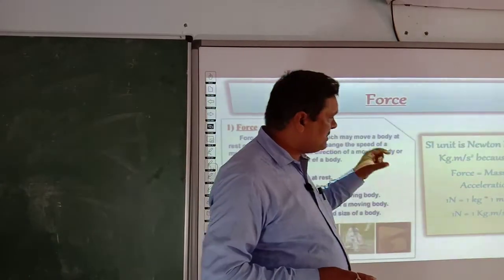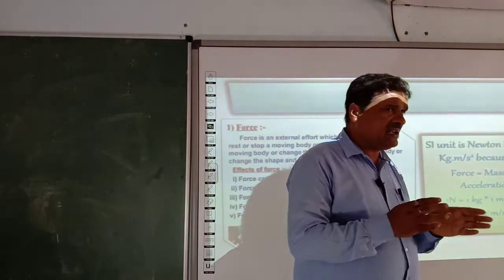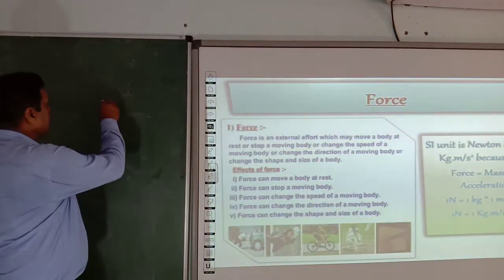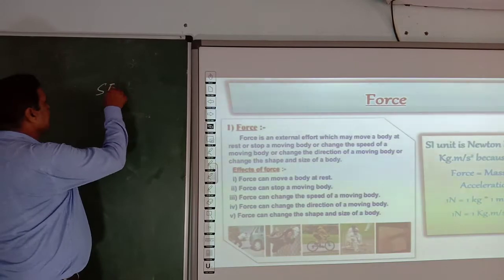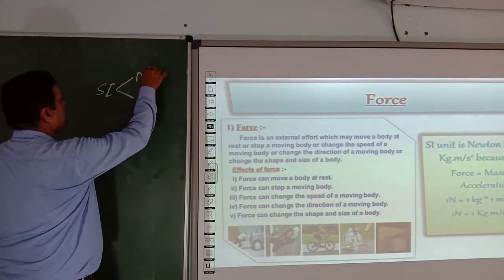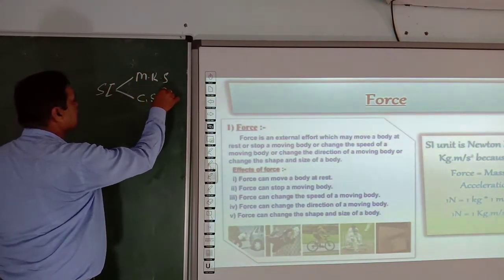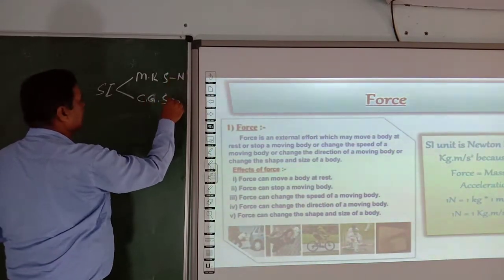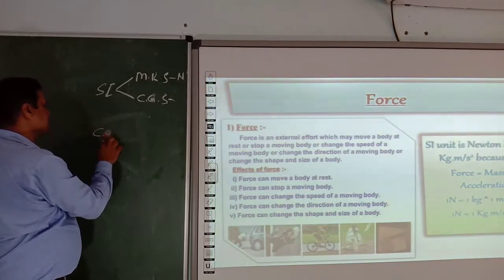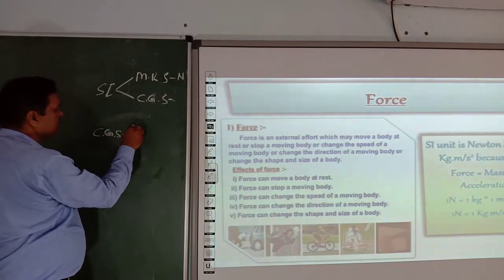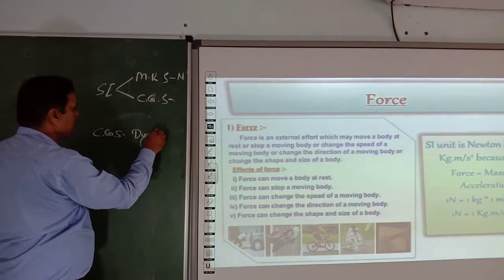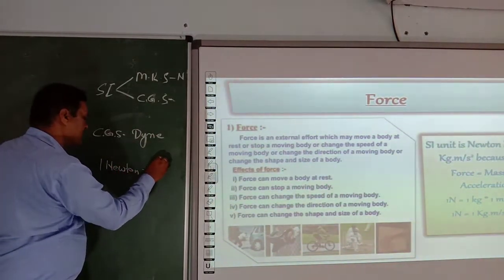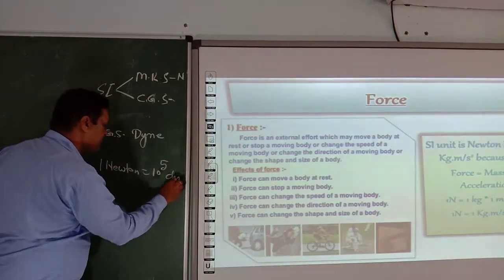The CGS unit of force is the dyne. One Newton is equal to 10 to the power of 5 dynes. So the SI unit belongs to the MKS system, and the dyne belongs to the CGS system. The conversion value is 10 to the power of 5 dynes per Newton.